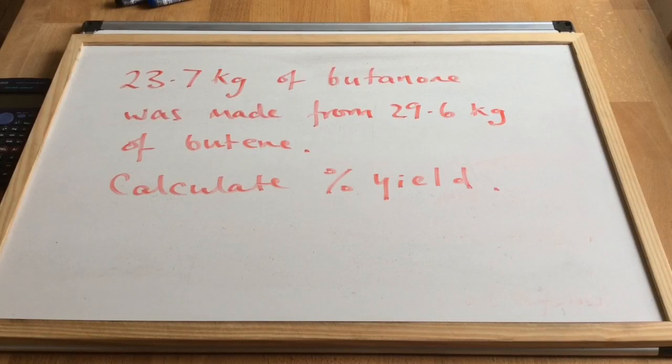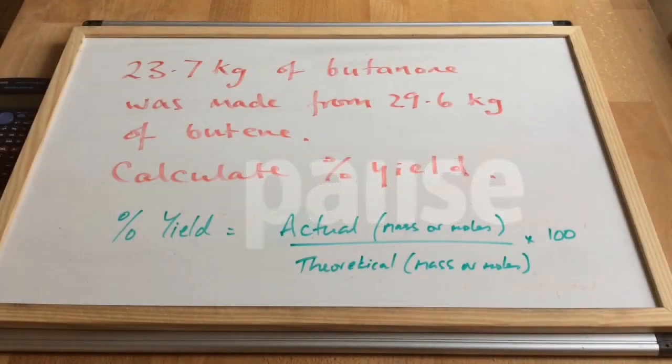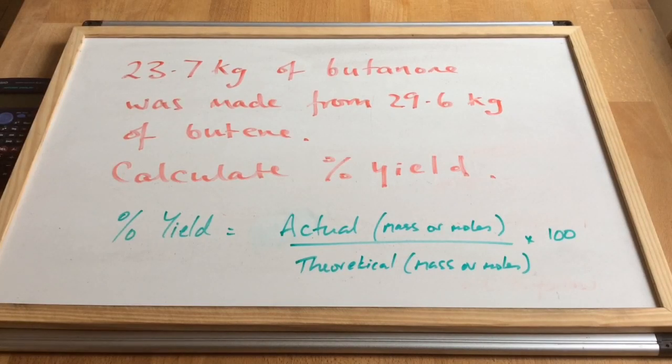So we'll look at a typical calculation now. 23.7 kilograms of butanone was made from 29.6 kilograms of butane; calculate the percentage yield. Before we start looking at the numbers, let's just remind ourselves what percentage yield is a measure of: it's the actual mass or moles produced divided by the theoretical mass or moles produced, multiplied by 100.